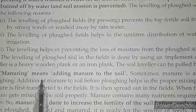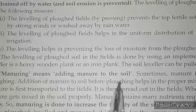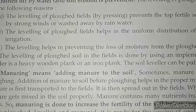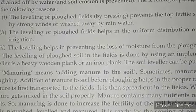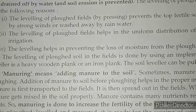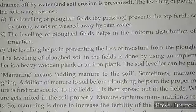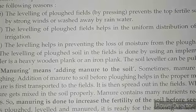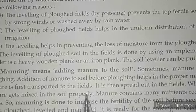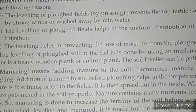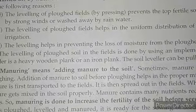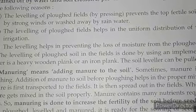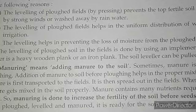Next is manuring. Manuring means adding manure to the soil. Sometimes manure is added to the soil before ploughing, because addition of manure before ploughing helps in the proper mixing of manure with the soil. The manure is first transported to the field and then spread out. When the field is ploughed, the manure gets mixed into the soil properly. Manure contains many nutrients required for the growth of the crop.